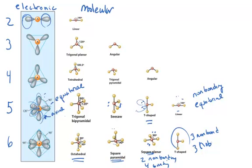These are some names of the molecular geometries associated with the electronic geometries that occur with an expanded valence.